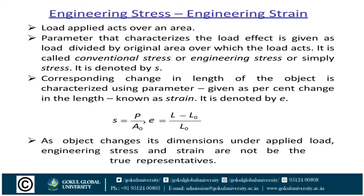Engineering stress and strain may be defined as follows. A load applied over an area — the parameter that characterizes the load effect is given as load divided by the original area over which the load acts, simply called conventional or engineering stress. Engineering strain equals L minus L₀ divided by L₀, which is the change in length divided by the original length. As an object changes its dimensions under applied load, engineering stress and strain may not be fully representative.